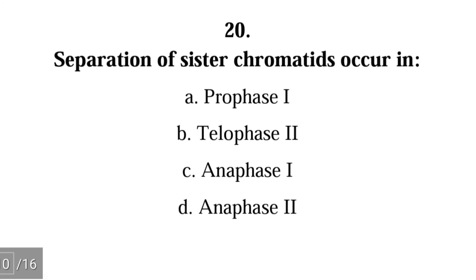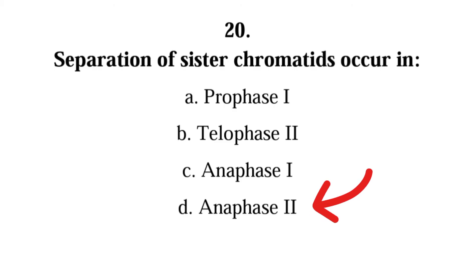Question 20: Separation of sister chromatids occurs in — A. prophase 1, B. telophase 2, C. anaphase 1, D. anaphase 2? The correct answer is D, anaphase 2. While homologous chromosomes separate in anaphase 1, sister chromatids separate in anaphase 2.